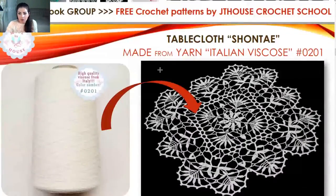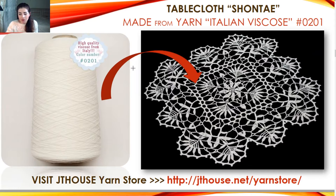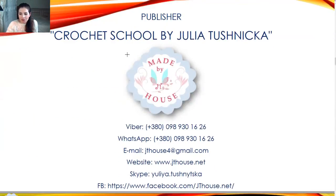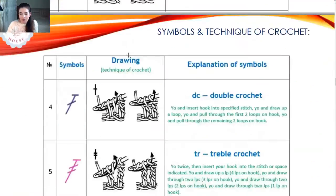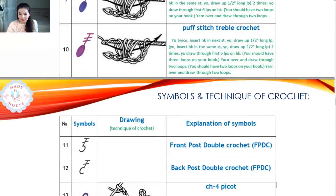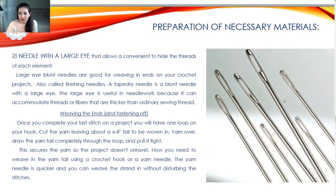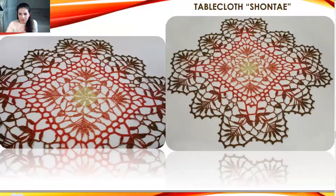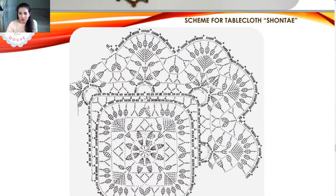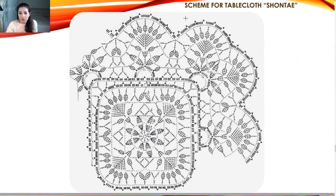Just about threads - I am using white Italian viscose. This is the most beautiful thread and I've been using it for my crochet projects, crochet dresses, for many years. I really enjoy working with this thread and I am sure you will like it too. I am using a crochet hook of 1.75 millimeters - this is my favorite hook for Italian viscose. I am also using a needle with a big eye just to hide all tails. Now we have a full scheme for our tablecloth and today we will make row number 11 and the last simple row, number 12.